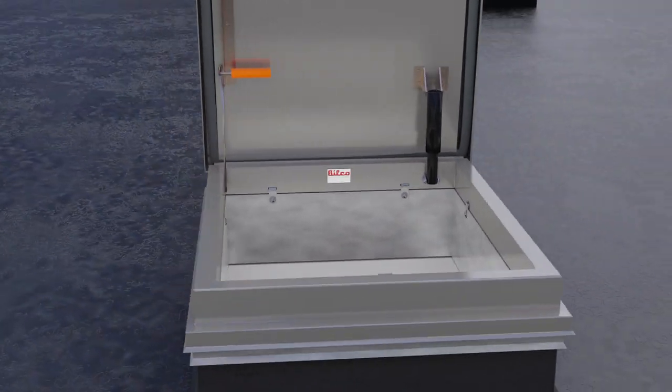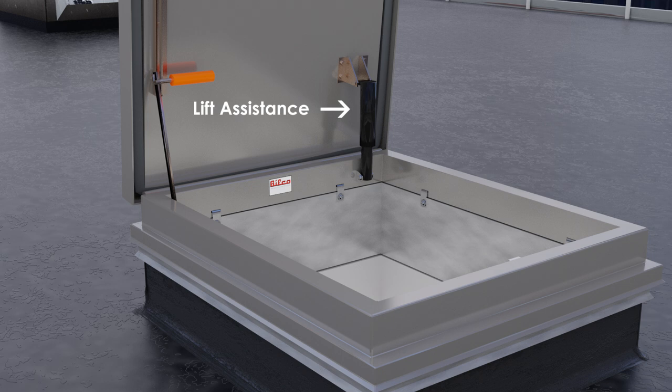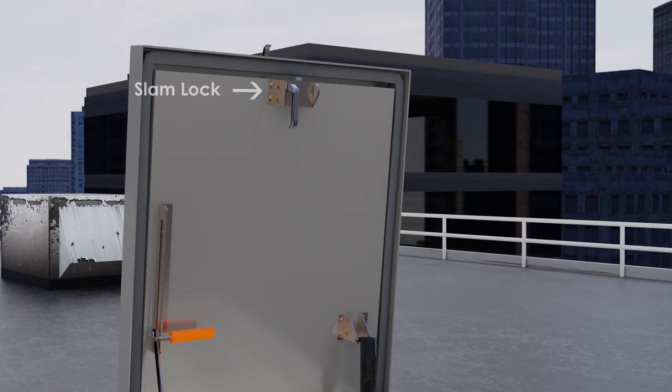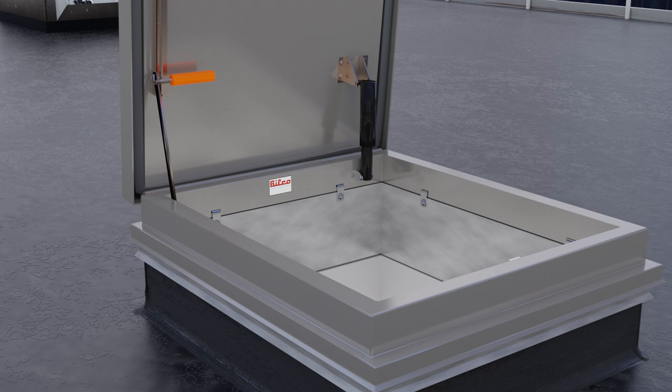The Versamount roof hatch is designed to operate just like a standard Bilko roof hatch. The hatch is supplied with engineered compression spring operators to provide smooth, easy, one-hand operation, an automatic hold open arm, a slam lock with interior and exterior padlock hasps, and a fully gasketed and insulated cover and curb for energy efficiency.